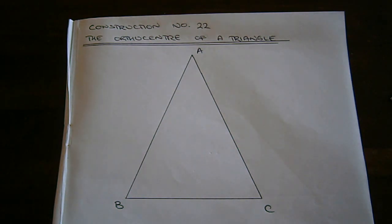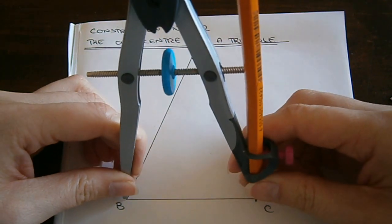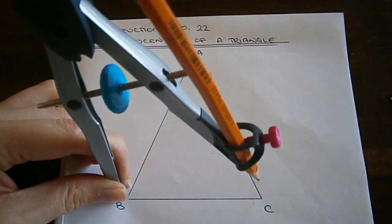So I start with taking my compass and adjusting it so that it is to the length of BC.